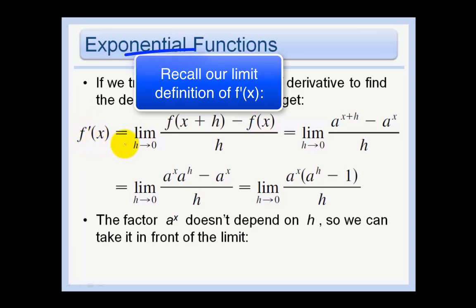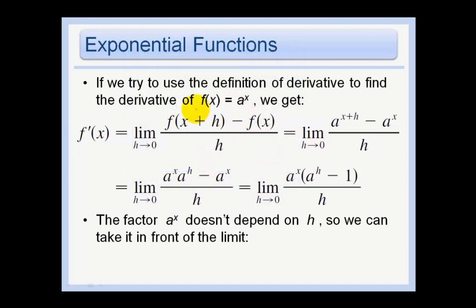f prime of x equals the limit as h approaches 0 of f(x + h) minus f(x) all over h. Remember that. And so let's just use our function y equals a to the x. And so we get a to the x plus h minus a to the x all over h. So by using our exponent rules, remember that a to the x times a to the h will be the same thing as a to the x plus h.